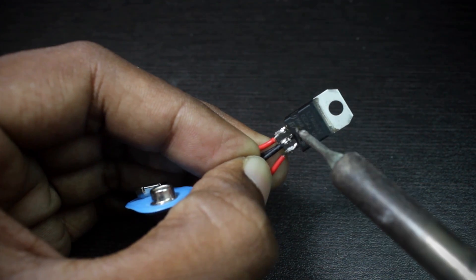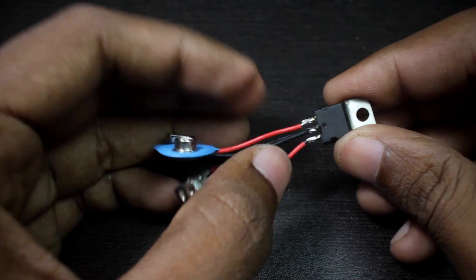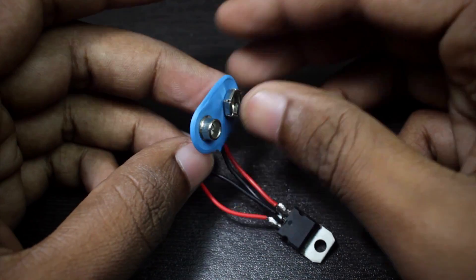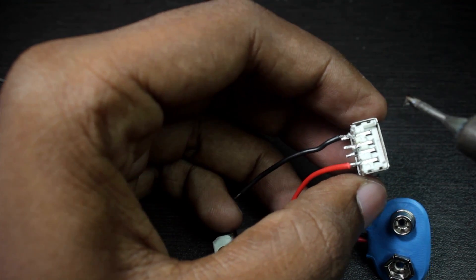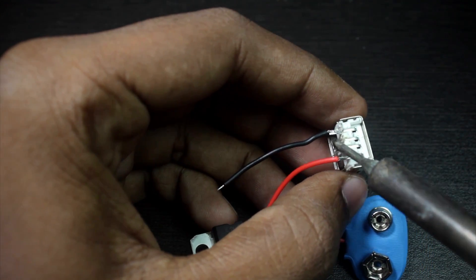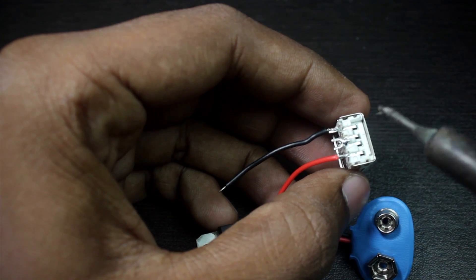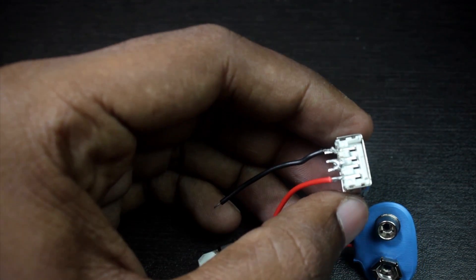Now I'm soldering the two data lines of the USB socket together just because this way it charges my phone a bit quicker. You can leave that as it is if you want and it's still going to work.